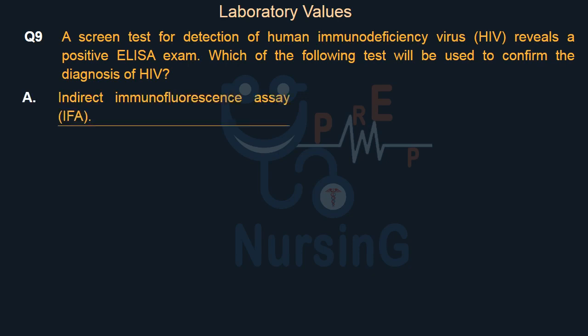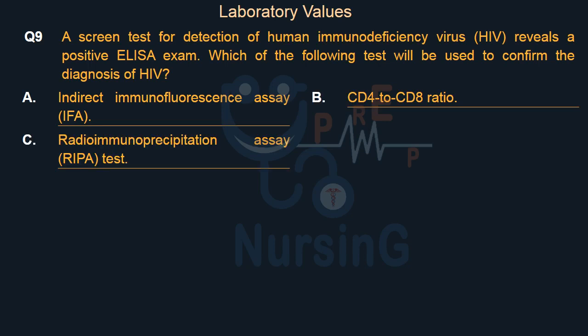Option A: Indirect immunofluorescence assay (IFA). Option B: CD4 to CD8 ratio. Option C: Radio immunoprecipitation assay (RIPA) test. Option D: P24 antigen assay.